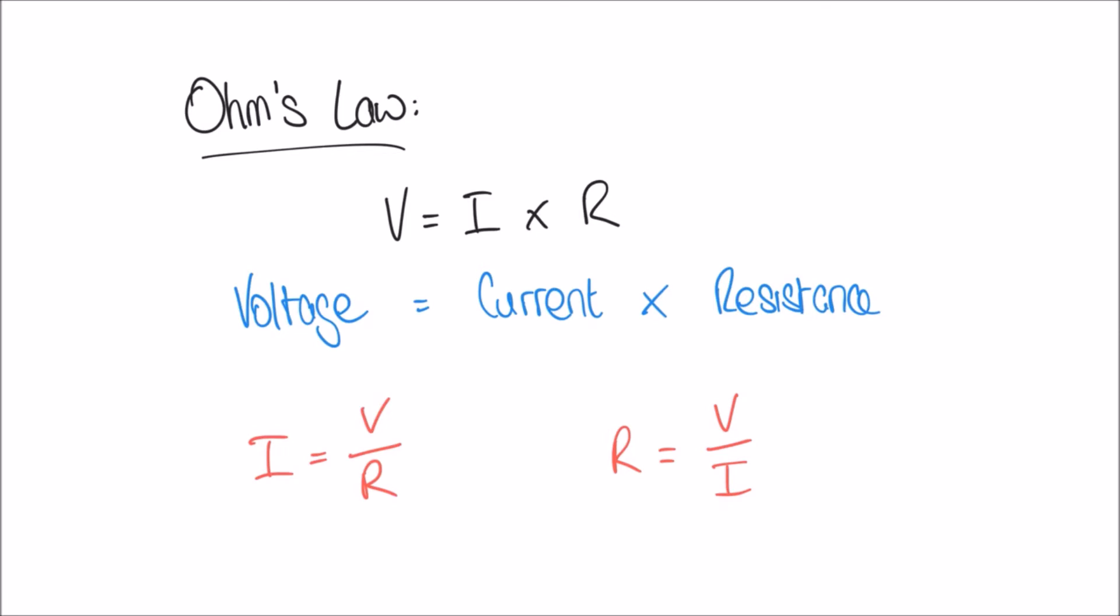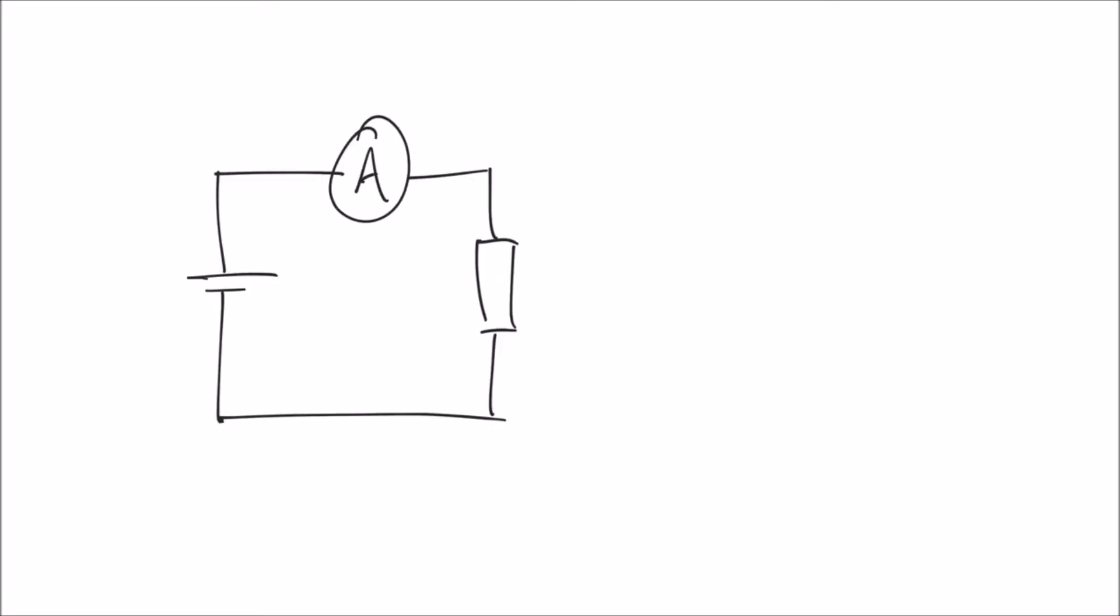We're going to try and use these with some quick examples here. Let's take a look at a very simple circuit. You can see here we've got a cell on the left, an ammeter at the top, and a resistor on the right-hand side. Let's say that our resistance is 10 ohms for the sake of example.